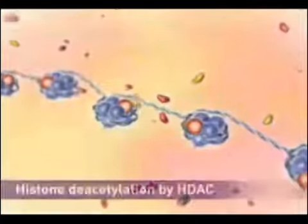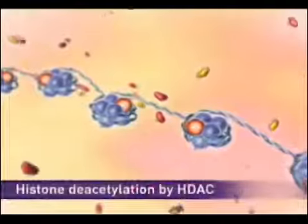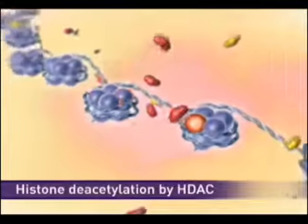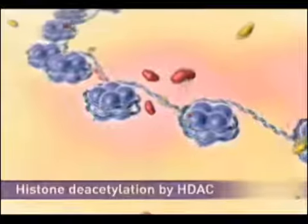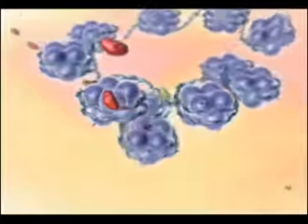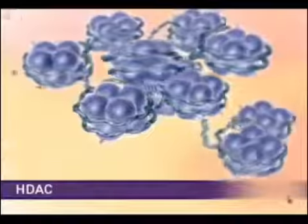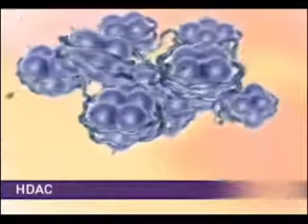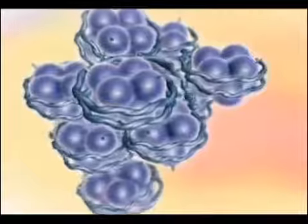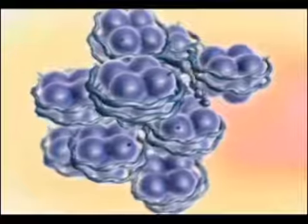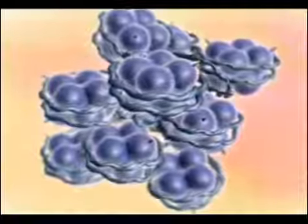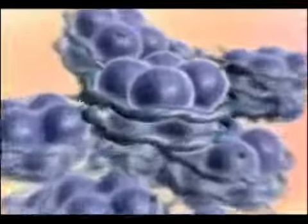Conversely, deacetylation of histones by HDAC results in tight coiling of the DNA and a closed chromatin structure. In some cancer cells there is an overexpression of HDACs, an aberrant recruitment of HDACs, or an under expression of HATs, resulting in hypoacetylation of histones and therefore a condensed or closed chromatin structure.